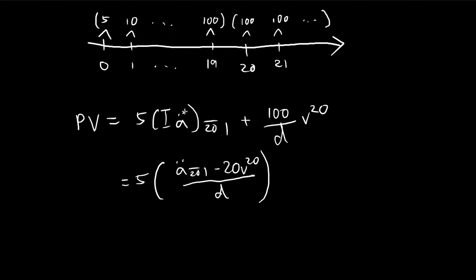So if this were not an annuity due, this was an immediate, this would be i at the bottom. But because the payments start at the beginning of each year, it switches out to a d at the bottom.